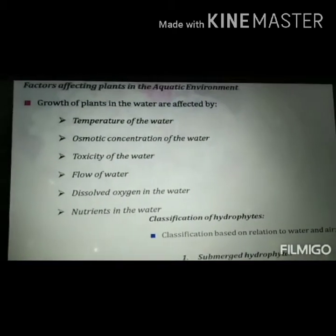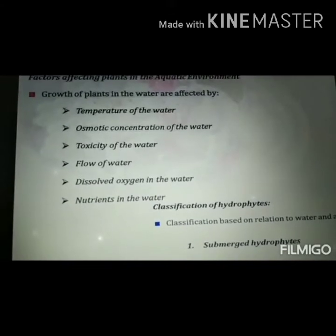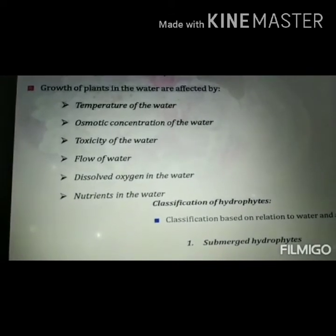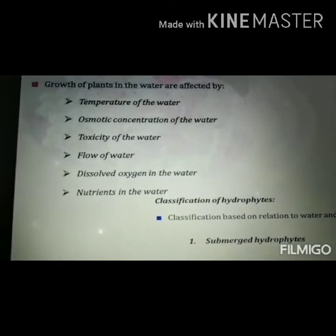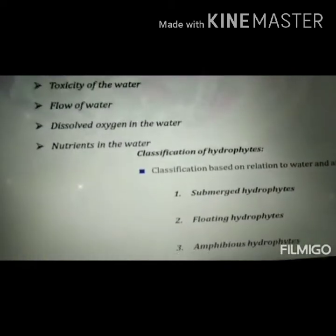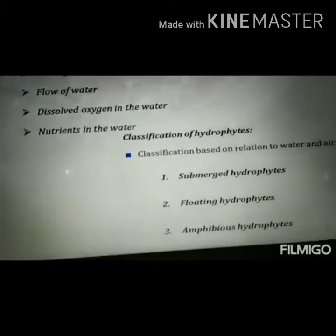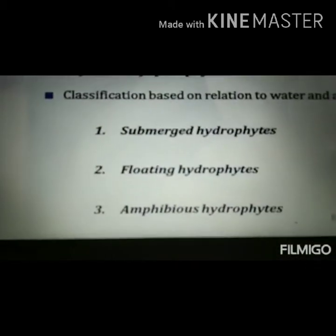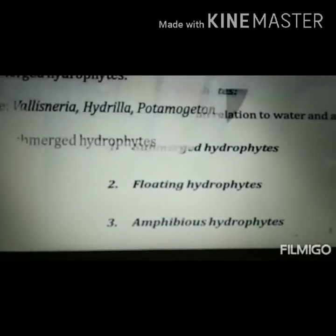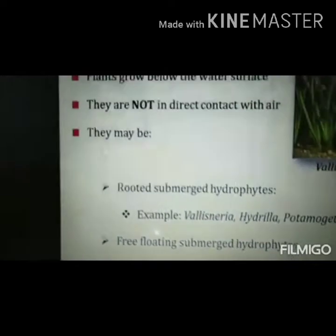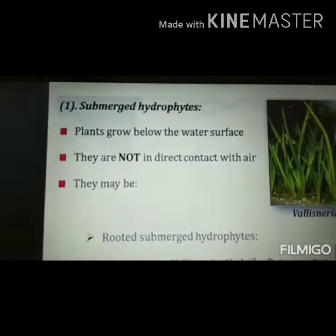Hydrophytes are adapted to different environmental conditions in water bodies, including temperature of the water, osmotic concentration, toxicity of the water, dissolved oxygen, and nutrients. Based on these factors, hydrophytes are classified into three types: submerged hydrophytes, floating hydrophytes, and amphibious hydrophytes. Submerged hydrophytes are plants that grow below the water surface and are not in direct contact with the air.